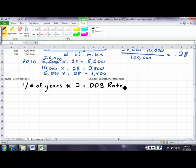1 divided by the number of years equals a rate. If we times that by 2, we get a double declining balance rate. So if I take 1 divided by 10 times 2, I get 20%.